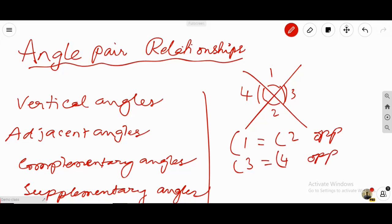So that's the definition of vertical angles. When two lines intersect, we get four different angles. The opposite angles are 1 and 2. Opposite angles 3 and 4 are going to be equal. That's number 1, the vertical angles.